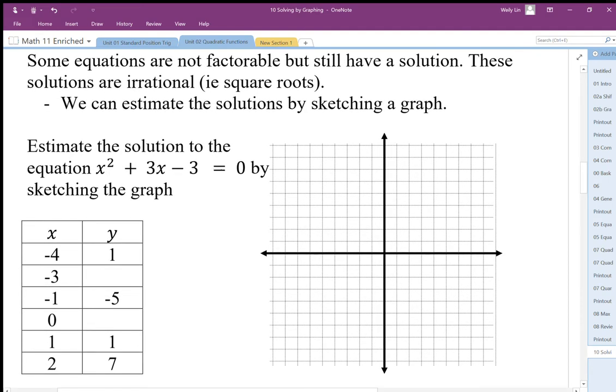If we sketch this graph, we plug in our x and y coordinates. For x equals negative 3, we plug in negative 3 and end up with 9 minus 9 minus 3, which is negative 3. So negative 3, negative 3. Negative 1, negative 5. When we plug in 0, we get a y-intercept of negative 3.